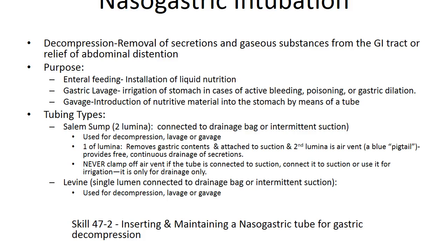The Levine tube is a single-lumen tube connected to a drainage bag or for intermittent suction, and can also be used for decompression, lavage, or gavage. We will see examples of each in the lab and practice insertion and removal. Nasogastric tube insertion does not require sterile technique. Before beginning, always assess vital signs, and insertion and maintenance takes place in the high Fowler's position.